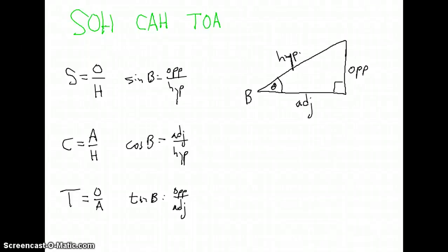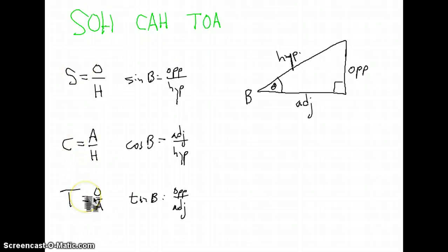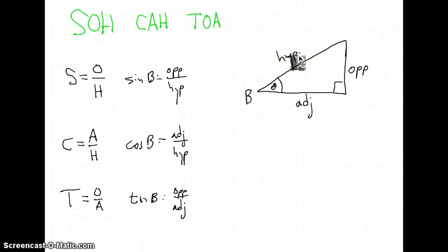We just got to the point of defining what sine, cosine, and tangent are in the last video. Sine is the opposite over the hypotenuse, cosine is adjacent over hypotenuse, and tangent is opposite over adjacent.